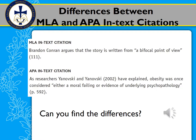Let's look at an example. The first is an MLA in-text citation. We see: "Brandon Conran argues that the story is written from a bifocal point of view" — the quote is in quotation marks, and after the quotation marks but before the period, we see the page number 111. That's basically how an MLA citation looks. When you've already used that source and add another line later, you would either put Conran and the page number in parentheses, or if no other sources appeared in between, you can just put the page number alone.